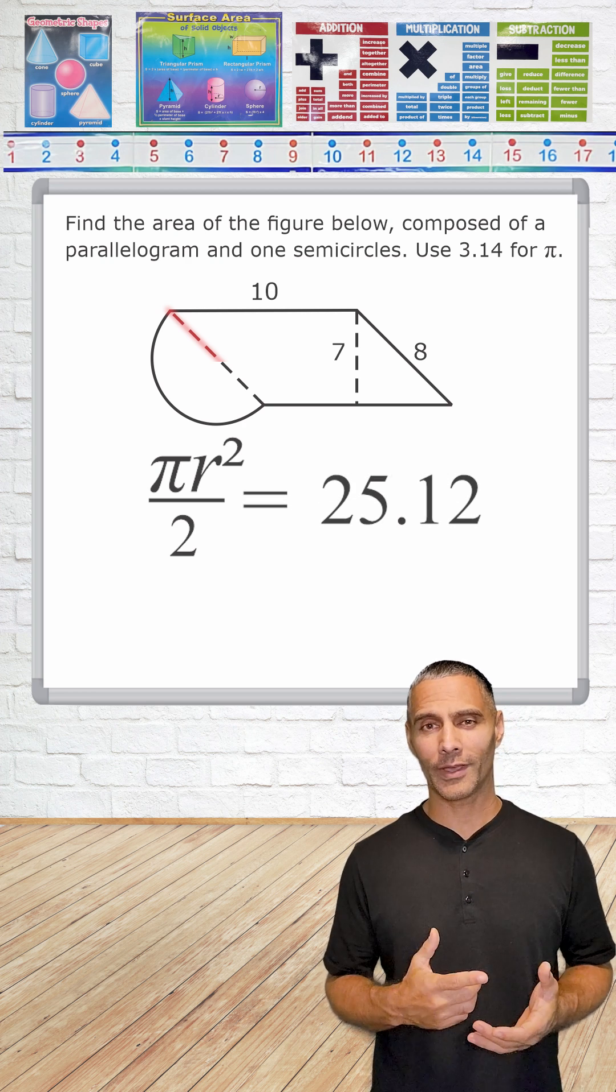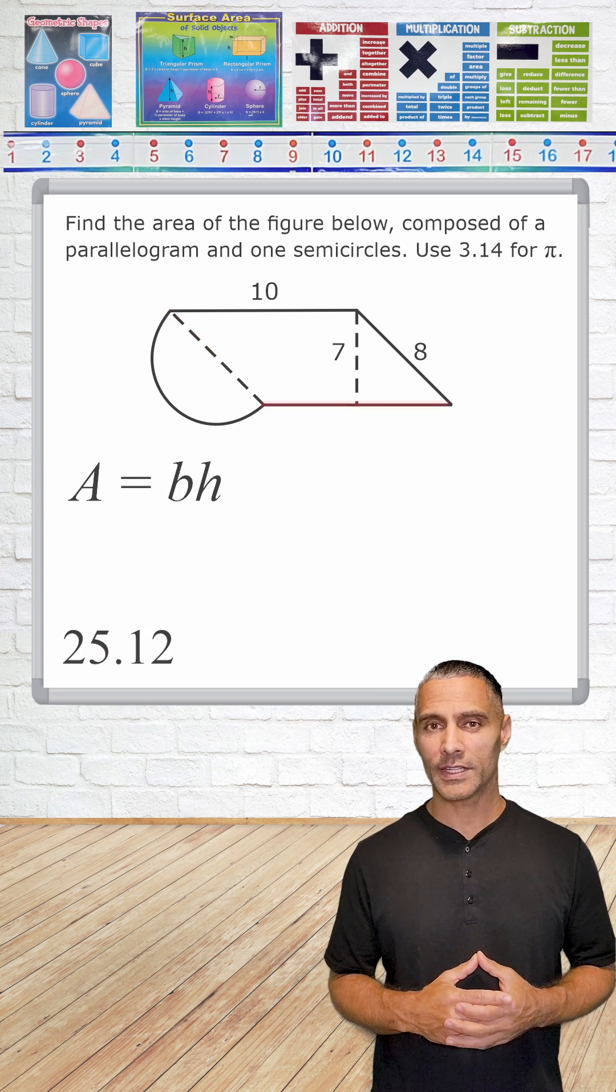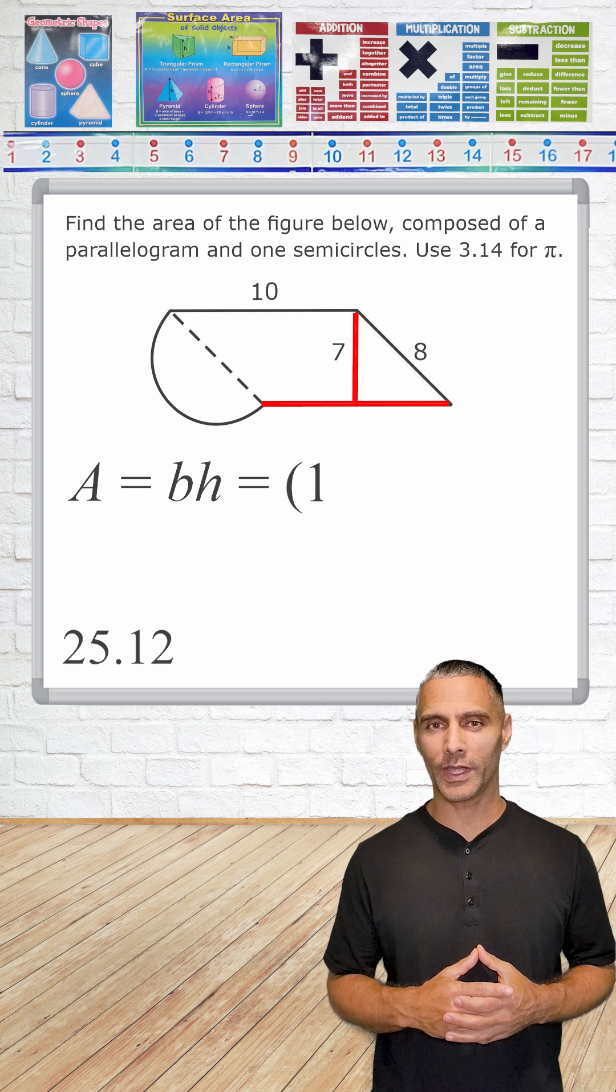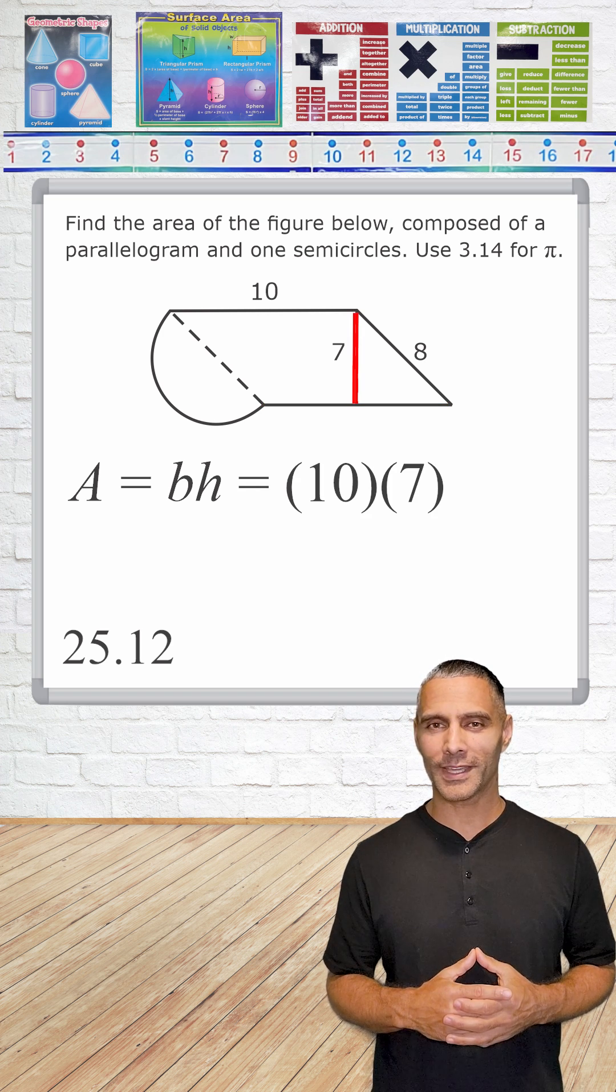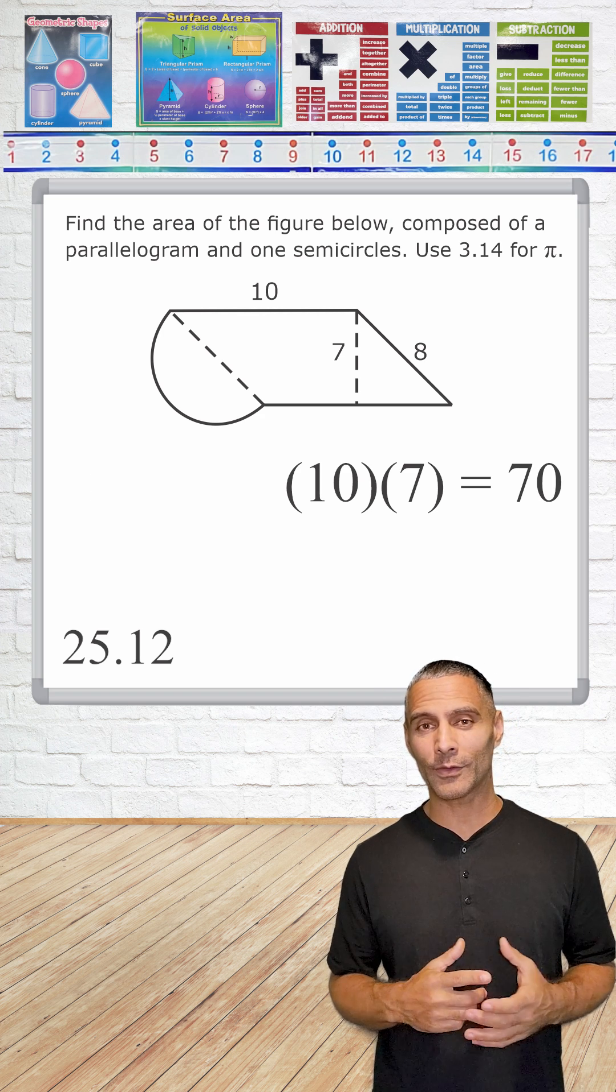Now we've got to figure out the area of the parallelogram. All we have to do is take 10, which is our base, and 7, which is the height, and substitute those values into our equation. Multiplying those values together gives us an area of 70 square units. Now all we have to do is simply add those areas together.